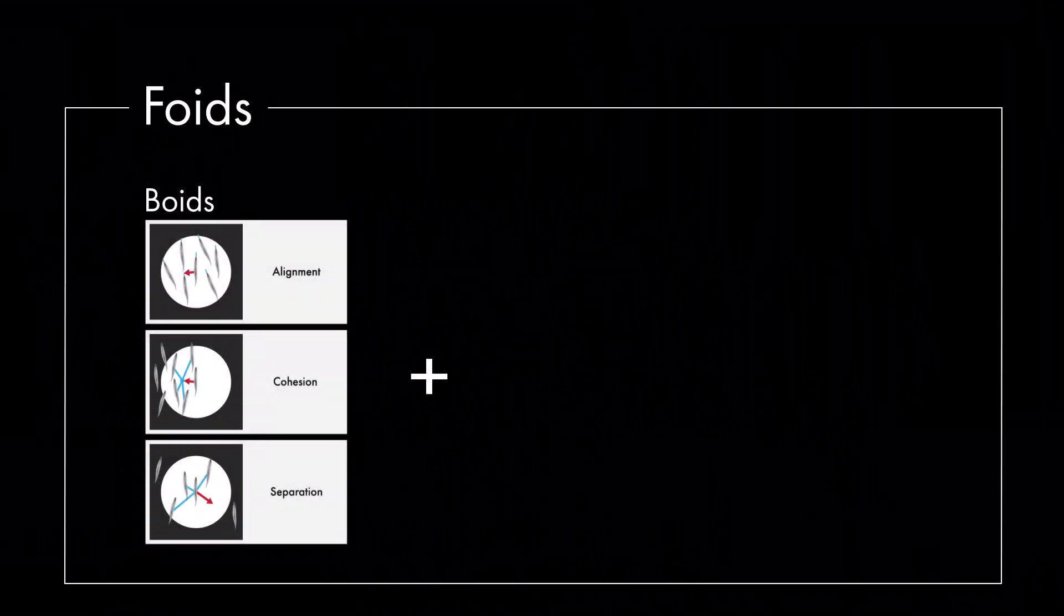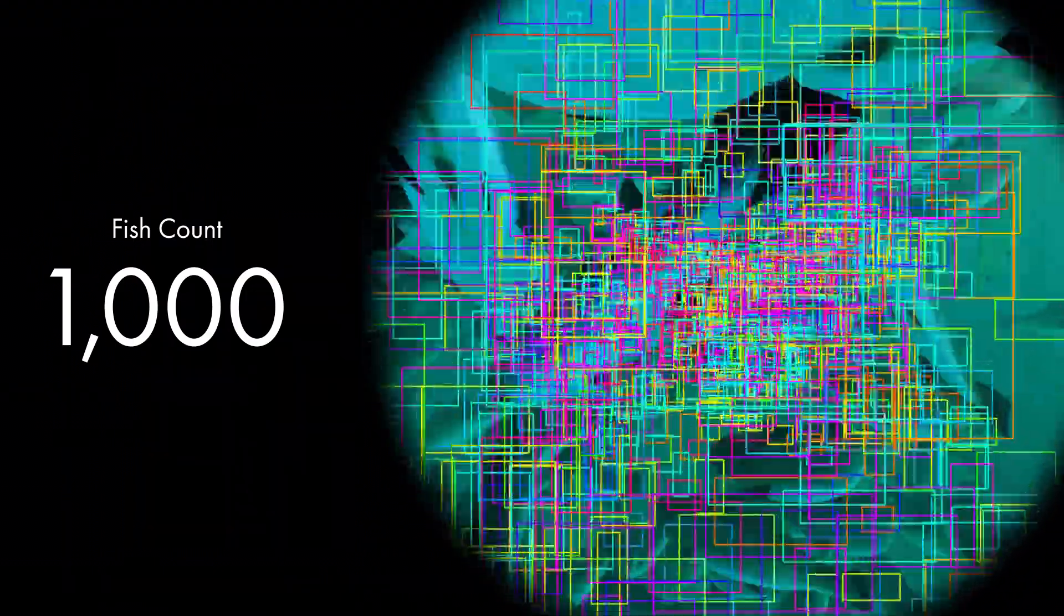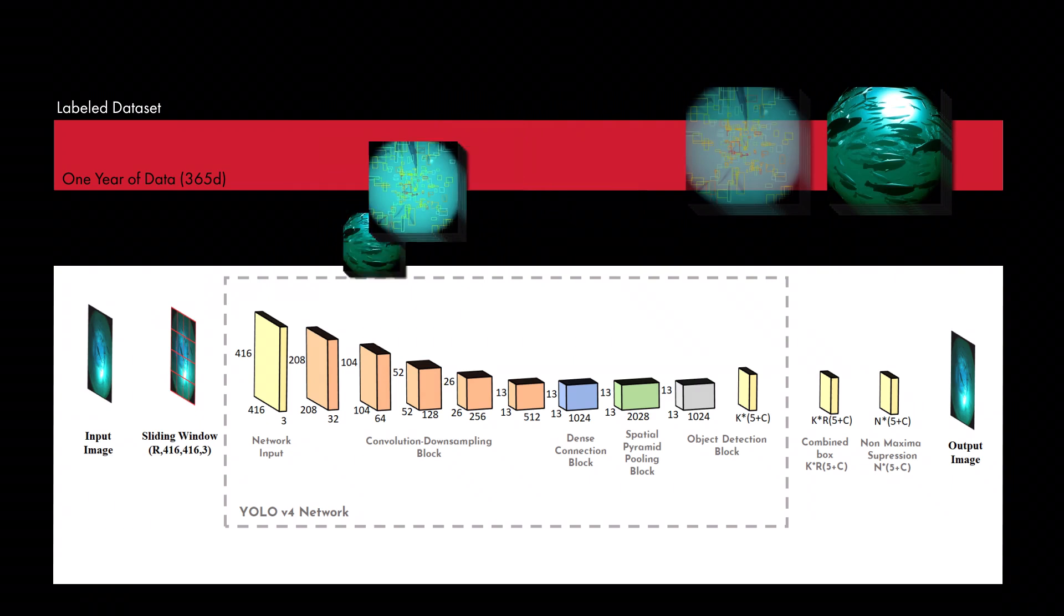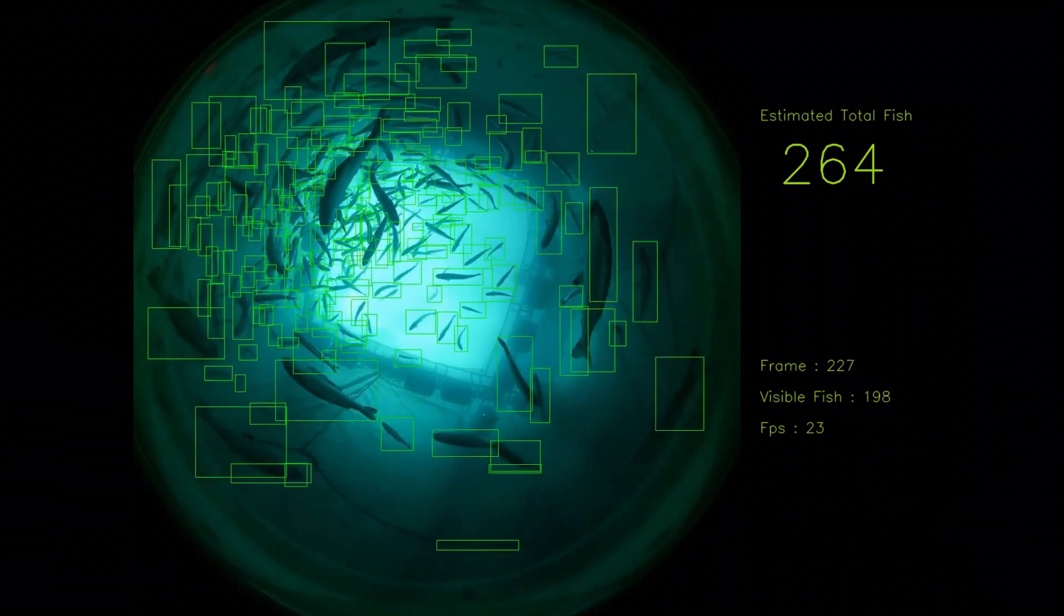Our simulation, FOIDS, can solve this problem. FOIDS introduces concepts from fish biology to VOIDS, resulting in a realistic fish school simulation. Using our simulation, we automatically generate annotated data, which we use as a dataset to train our deep learning model that is capable of counting fish.